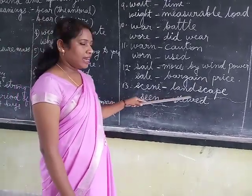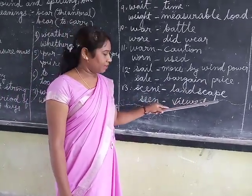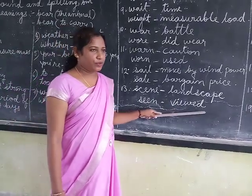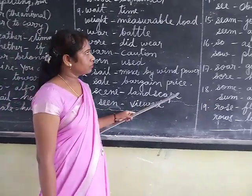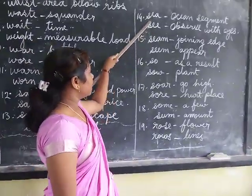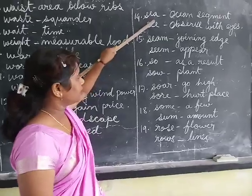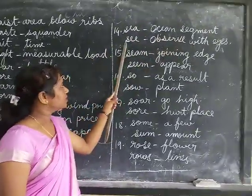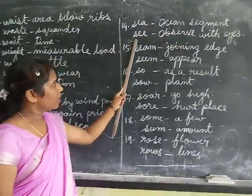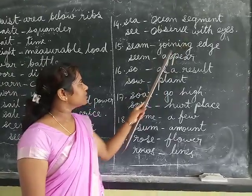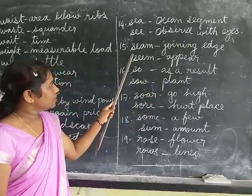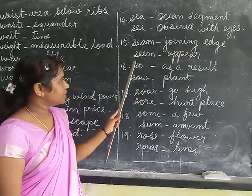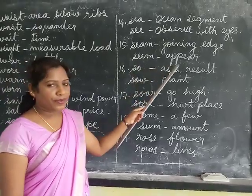See — see means to observe with the eyes. S-E-A, sea — sea means the ocean. Seam — seam means a joining edge. Seem — seem means to appear.